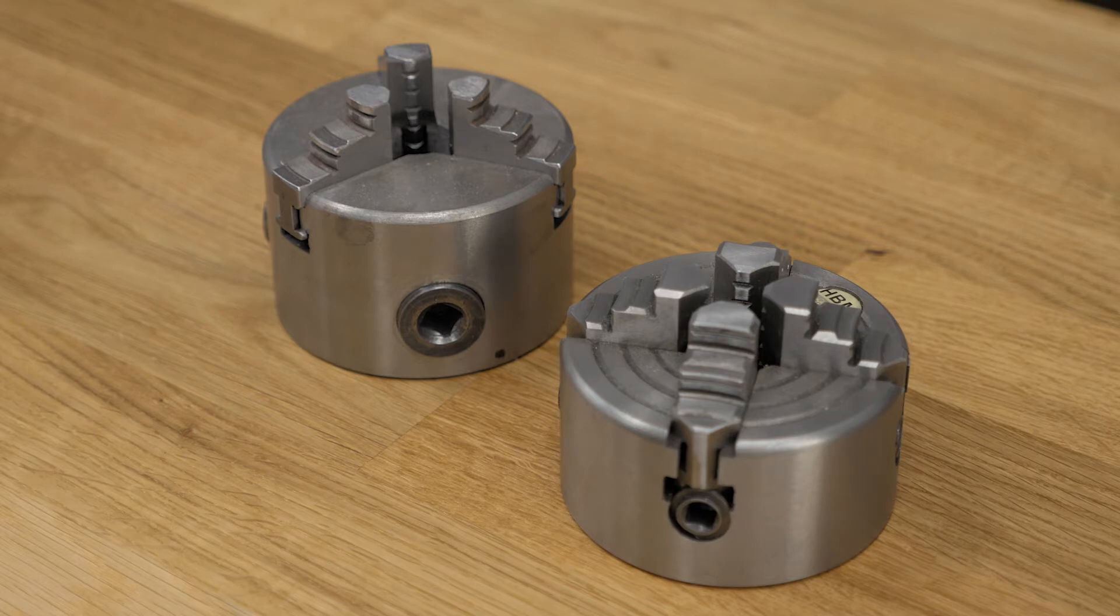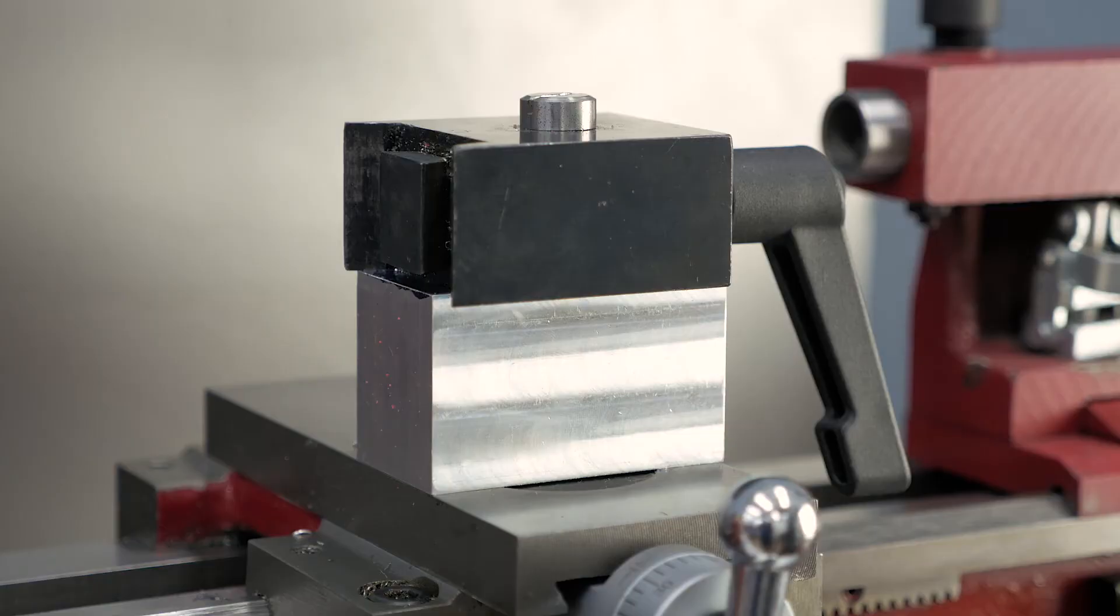So that's why I bought the collet chuck. And since that one was installed, I used the lathe quite a lot. The next two things I want to talk about are the tool holder and the compound - well, the absence of the compound because I removed it. And there's quite a good reason for that.